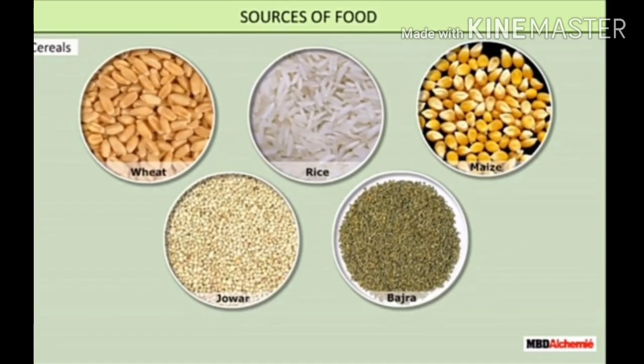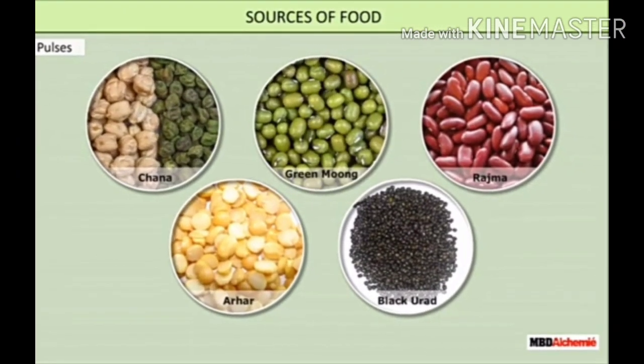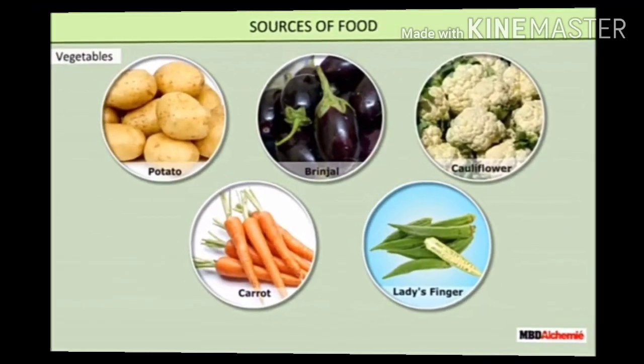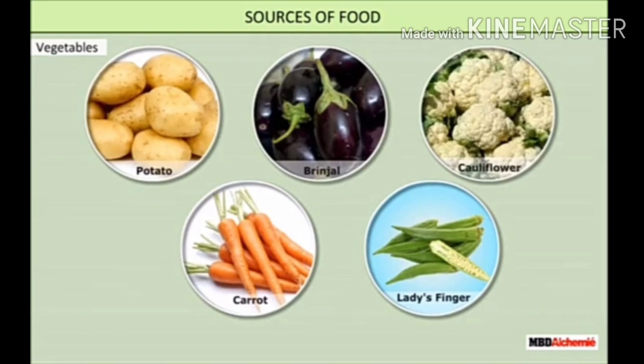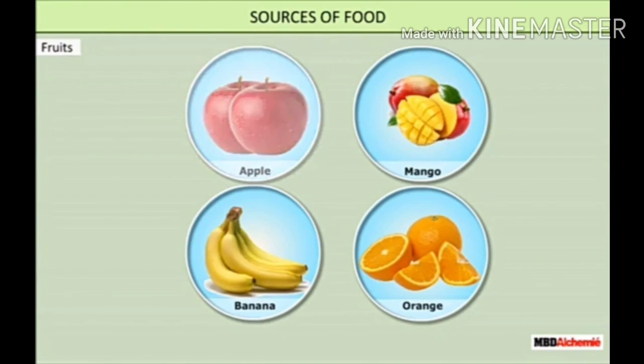If we talk about cereals, farmers are growing cereals like maize, wheat, and rice. Many cereals are grown around us which we use as food. The second category is pulses — different types of pulses are also grown by our farmers, for example arhar, masoor, moong, etc. For vegetables, we are eating potatoes, brinjal, cauliflower, carrot, and ladyfinger — all these are vegetables that we get from plants.